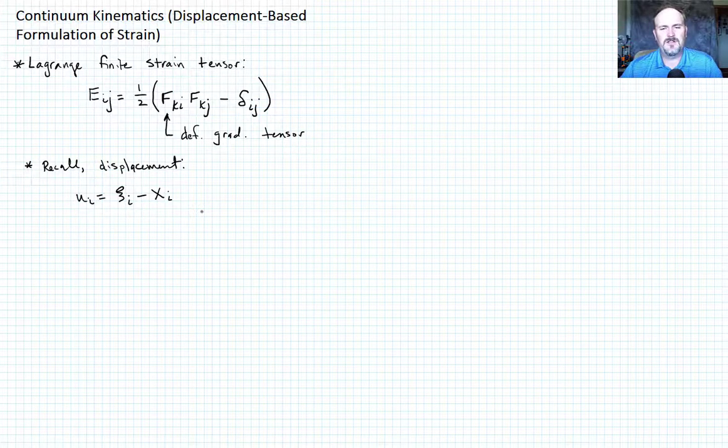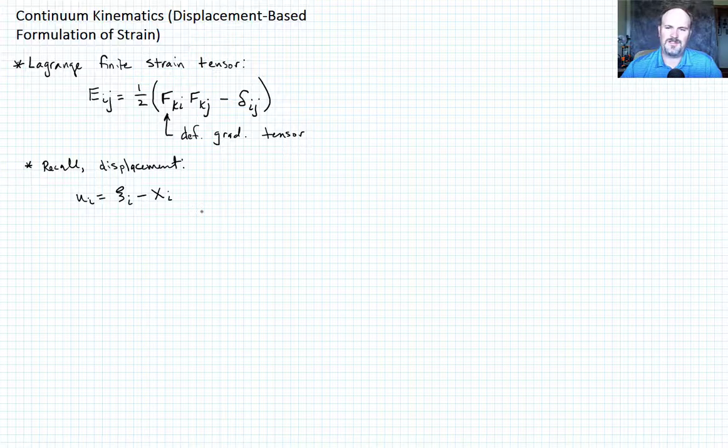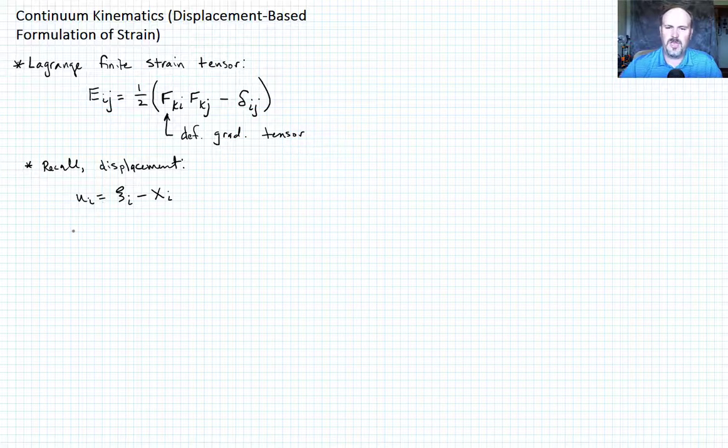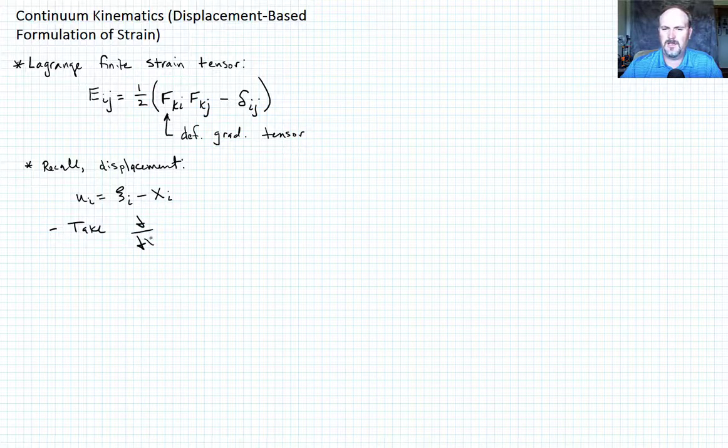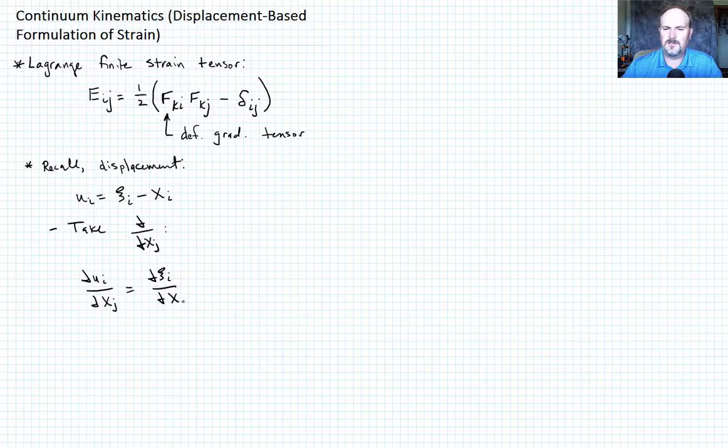Well, if you remember the deformation gradient tensor is defined as just the partial of x_i with respect to X_j. So to at least get that term to emerge in this equation, we just need to take the partial of this equation with respect to X_j. So let's just say take the partial with respect to X_j, and then we end up with partial u_i partial X_j equals partial x_i partial X_j minus partial X_i partial X_j. This term, first term on the right-hand side, that is our definition of F_ij. That's our deformation gradient tensor.